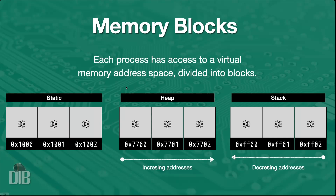We will be interacting with these three blocks. Starting right after the code block, we have the block labeled 'static,' and this is where we store our constants and our variables at the container level — also known as global variables. These are said to have a static lifetime, which means they're available for the entire lifetime of your process, from when it starts executing up to when the process exits.